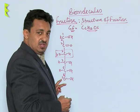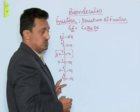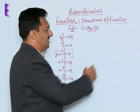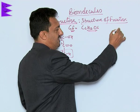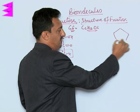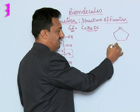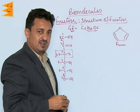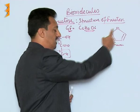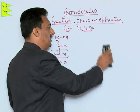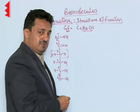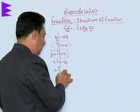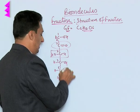This is the official Fischer projection structure of the fructose molecule. Fructose exists in a five-membered cyclic structure like furan — a furanose structure — which is a heterocyclic structure in which one of the atoms is oxygen. The ketonic group on the second carbon reacts with the OH group of the fifth carbon to form this ring.